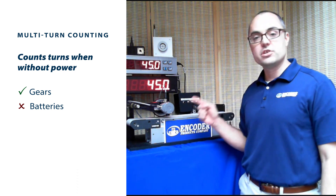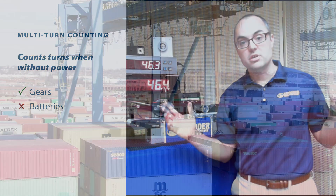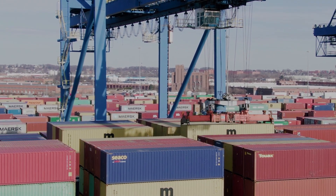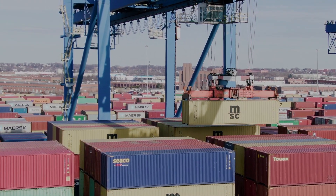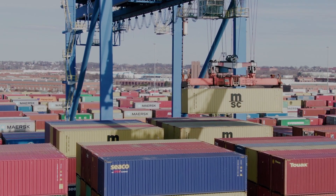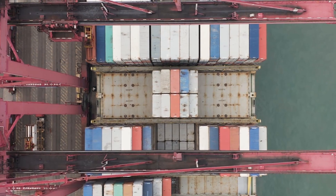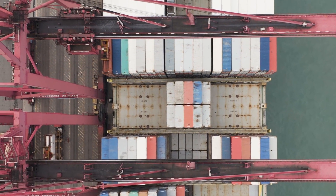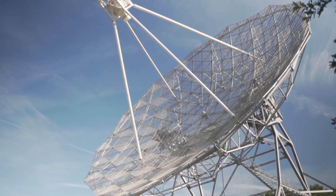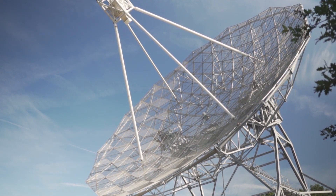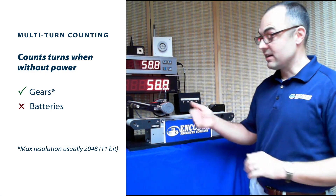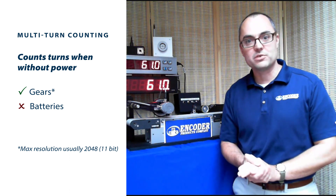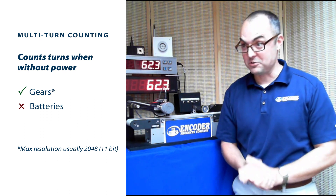If you have an application like a gantry traveling 40, 50, or 100 feet, or any long-distance application, you might have a motor running a gearbox doing five or ten thousand revolutions to get from one end to the other. With gear-based encoders, those gears typically — in most competitor products — roll over to zero after 1024 or 2048 turns. So if you have more than 2048 turns, a gear-based encoder very often won't be able to count high enough. It's like an old car odometer that rolls over at 100,000 miles.